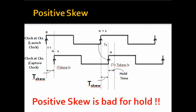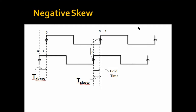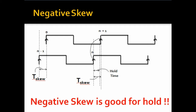So, now can we say that positive skew is bad for hold? Now let's consider the case with negative skew. Negative skew means that the time it takes for the clock to reach the capture flop is less than the time it takes for the clock to reach the launch flop. It means that the nth data being captured at the capture flop will start getting captured, and by that time the n+1 data will not be getting launched from the launch flop because the same edge has not reached the launch flop yet. So, at this time the nth data is being captured at the capture flop and it got enough time to be held at the input to be captured reliably. So, basically can we say that negative skew is good for hold? Yes, we can say that negative skew is good for hold.